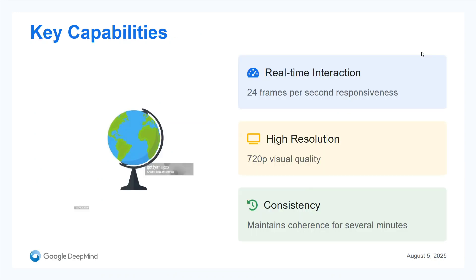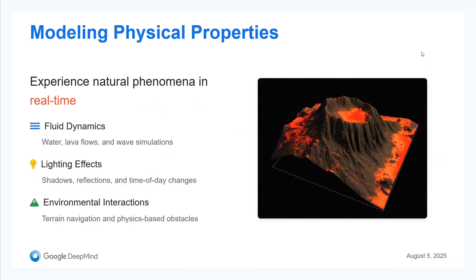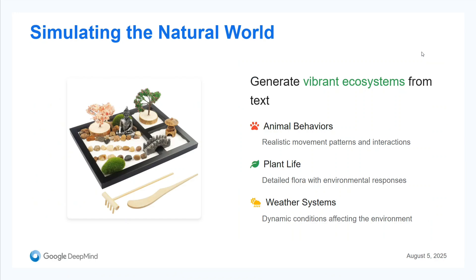Talking about the key capabilities: it has real-time interaction, high resolution, and it is quite consistent for several minutes — the environment remains consistent. It models physics properties and lets you experience natural phenomena in real-time, as we saw in most of the demos. Fluid dynamics are followed, lighting effects are followed, and environment interaction can be seen in the model. It is also simulating the natural world — animal behavior, plant life, weather systems, and more.